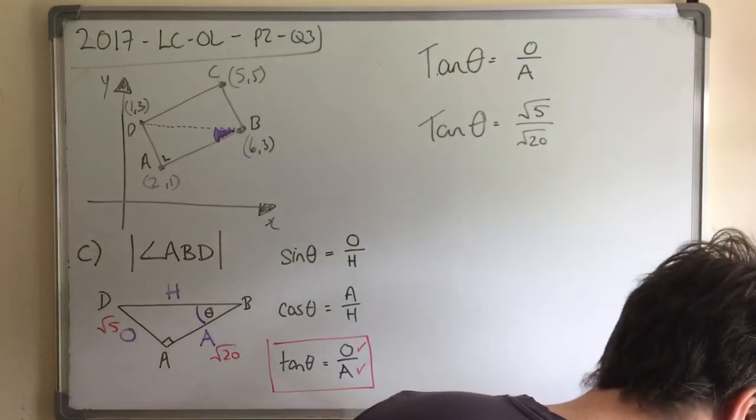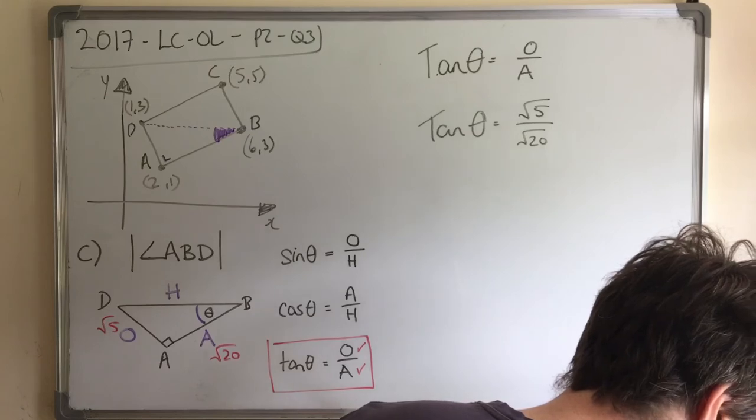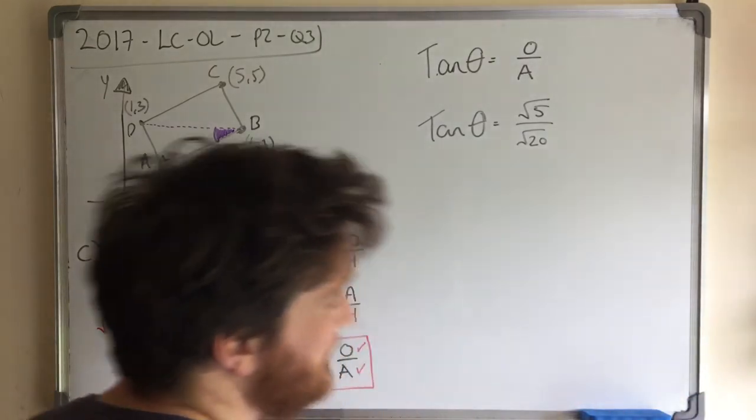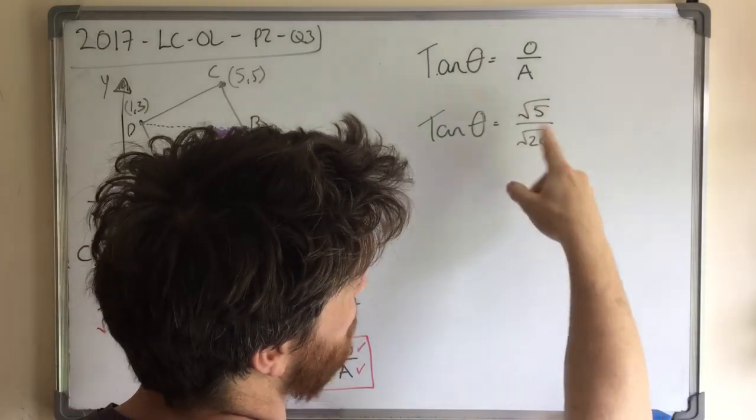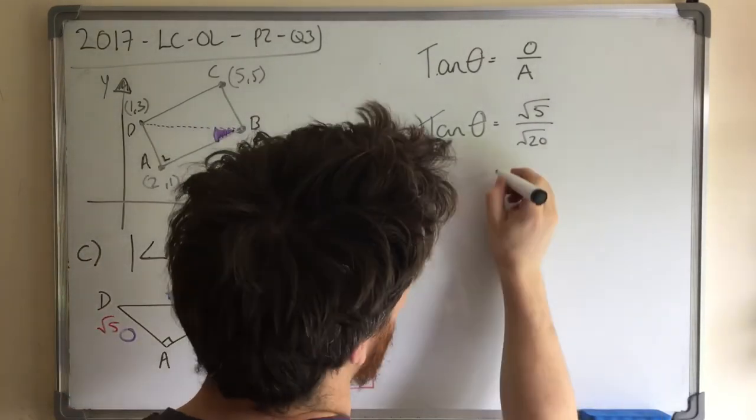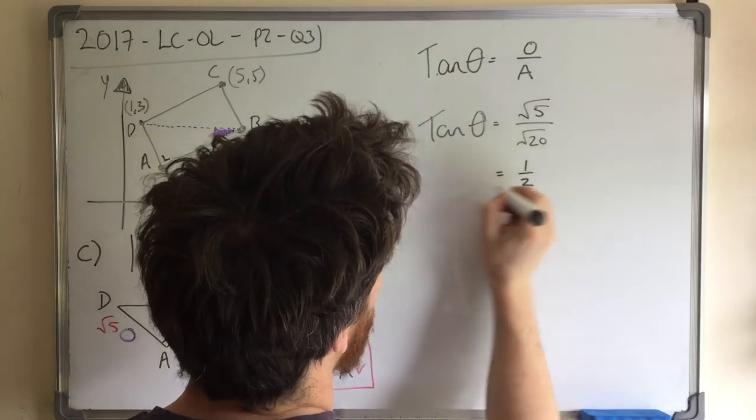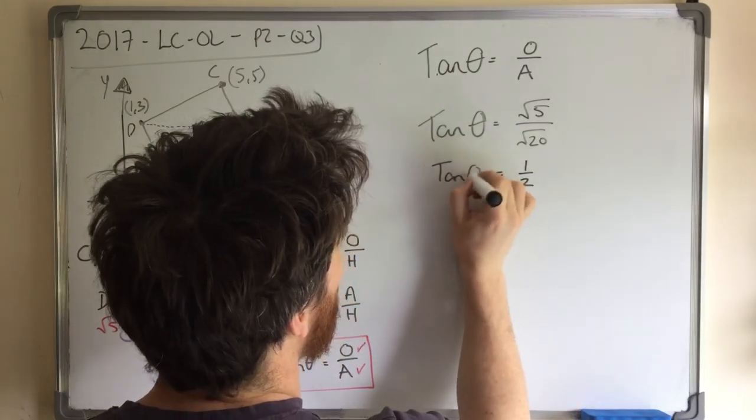If you do square root of 5 and then divide it by square root 20, you'll see that you get a square root of a quarter, which is a half. So we've got tan theta equal to a half.